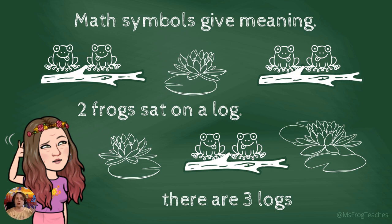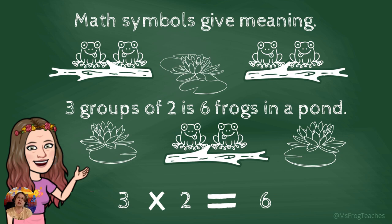So in moving on and thinking about different math symbols, how do we tell the story about two frogs that sat on a log in a pond? And there are three logs, two frogs on each log. Well, we can say two groups—three groups of two frogs is six frogs in a pond.